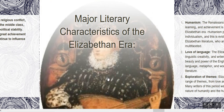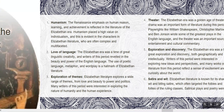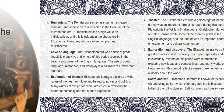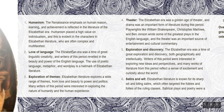Literary characteristics of the Elizabethan era include humanism, love of language, exploration of themes, theatre, exploration and discovery, and satire and wit. From the Renaissance, the emphasis on human reason, learning and achievement is reflected in the literature of the Elizabethan era. Humanism placed a high value on individualism, and this is evident in the characters of Elizabethan literature, who are often complex and multifaceted.